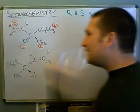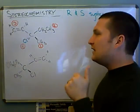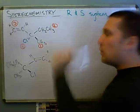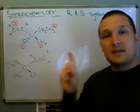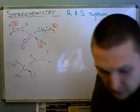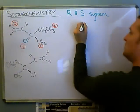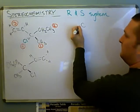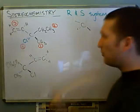So when you have something drawn in a three-dimensional configuration, and you want to rotate it so that the lowest priority is facing away from you, step one is redraw the chiral center. So you have your chiral center there, and you just redraw that. Right? The same way with all of those bonds, but with nothing attached to the bonds. That's step one.